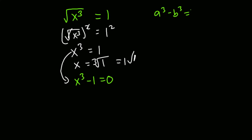We apply the general difference of cubes property, which says that a³ minus b³ equals (a minus b) times (a squared plus b squared plus ab). This is the principle we will apply to expand x³ minus 1, where x is a and 1 is b.